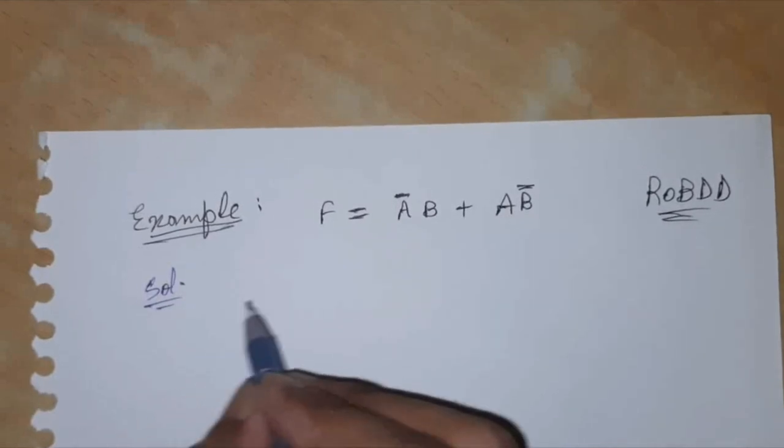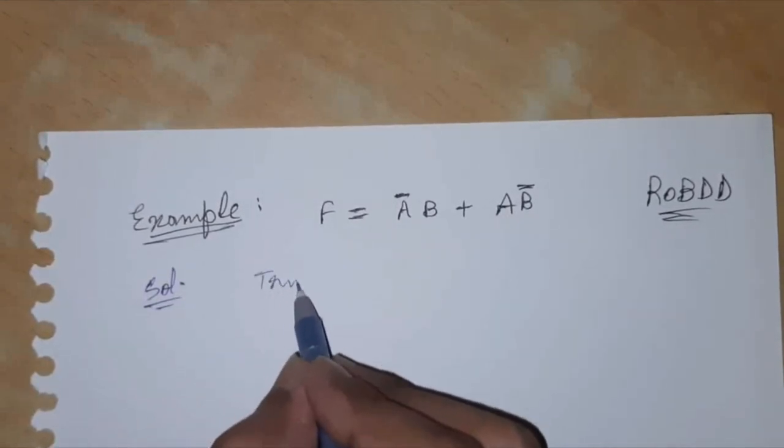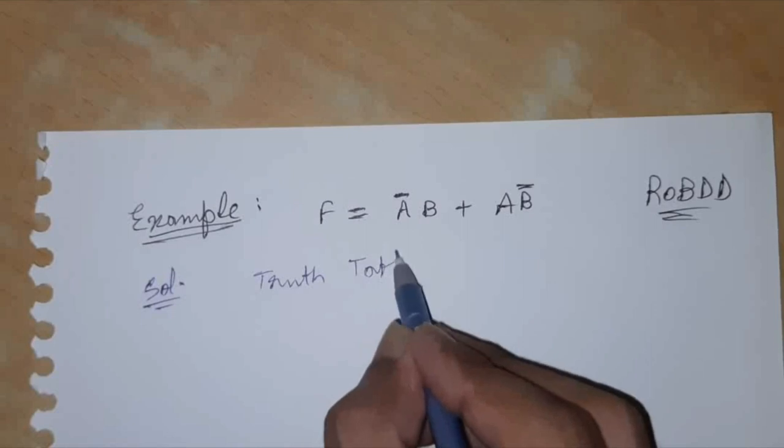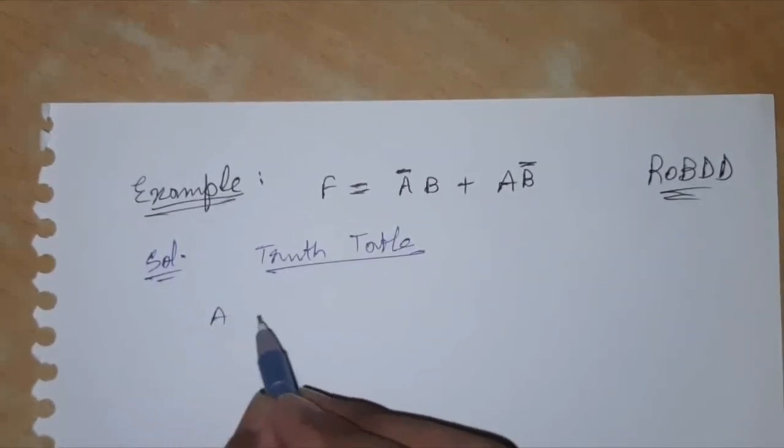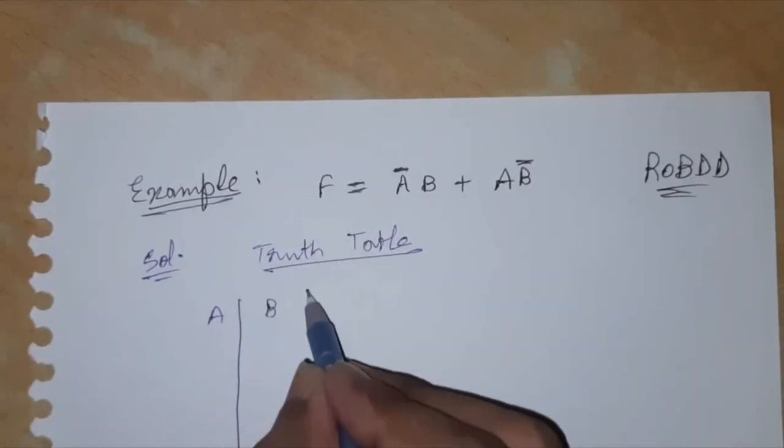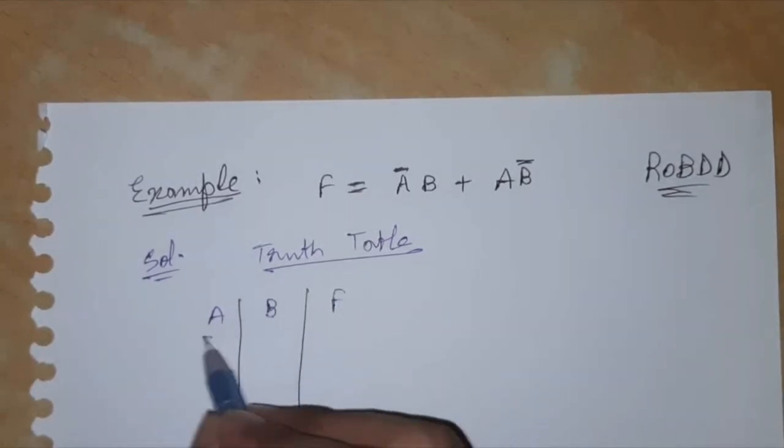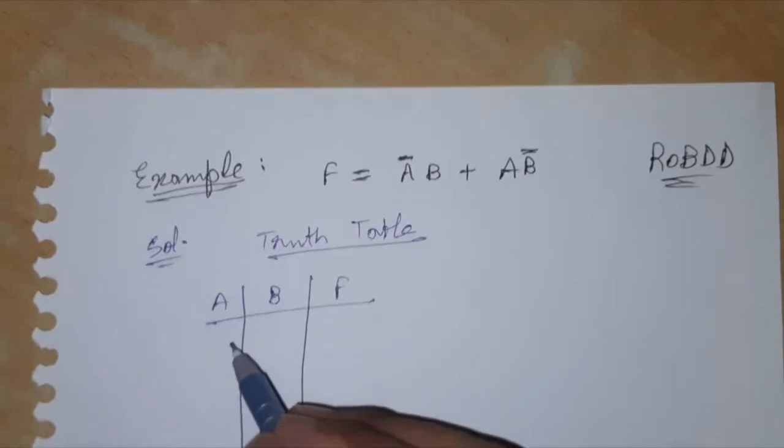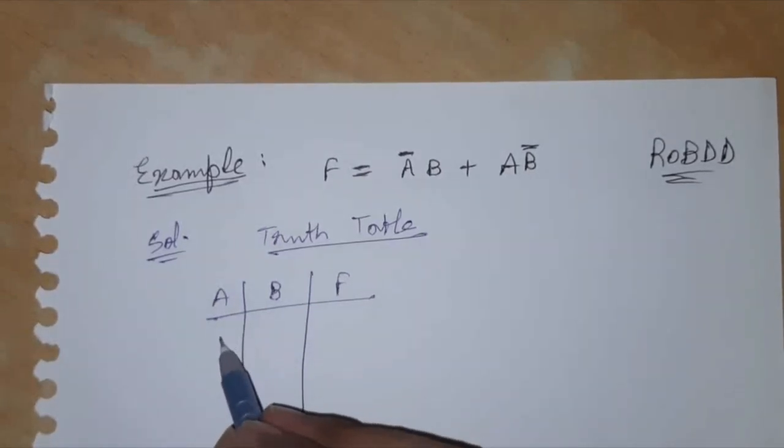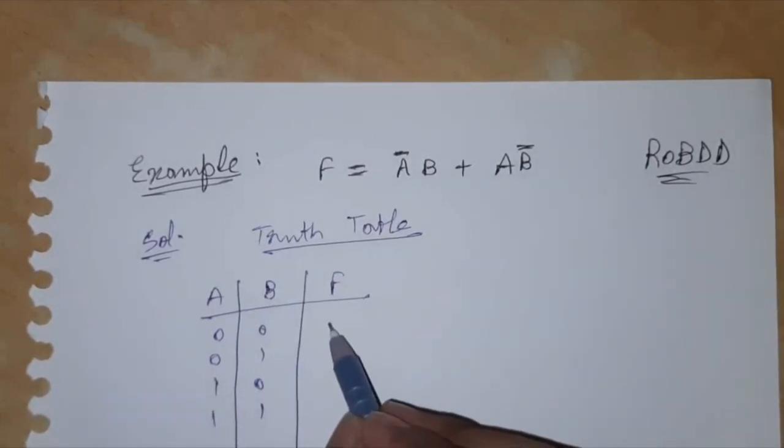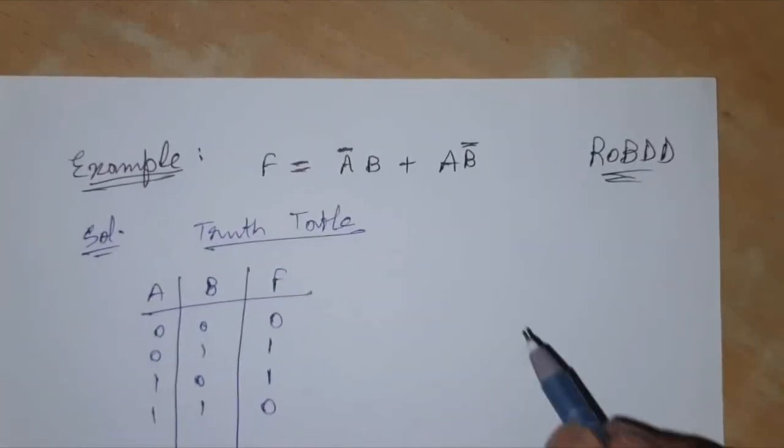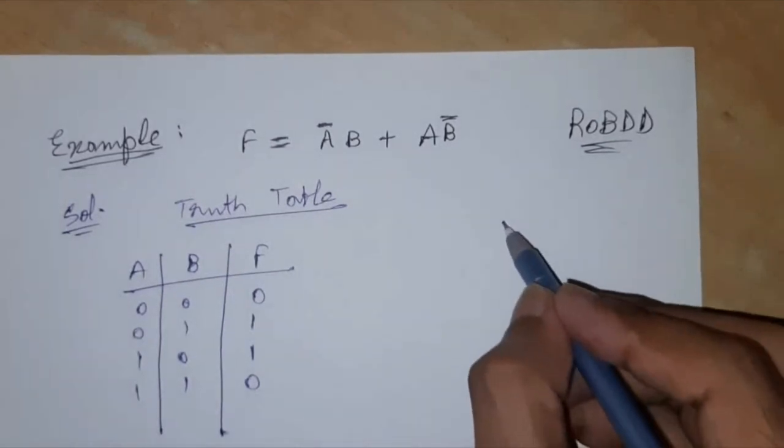For time being, let us see this one: A bar B plus A B bar, and we have to construct its ROBDD. So how shall we solve this one? See, the first thing what we have to do is construct a truth table. So I think most of you would be knowing how to construct a truth table for this. Since there are two variables, there will be four combinations: 00, 01, 10, 11, and this will be 0, 1, 1, 0.